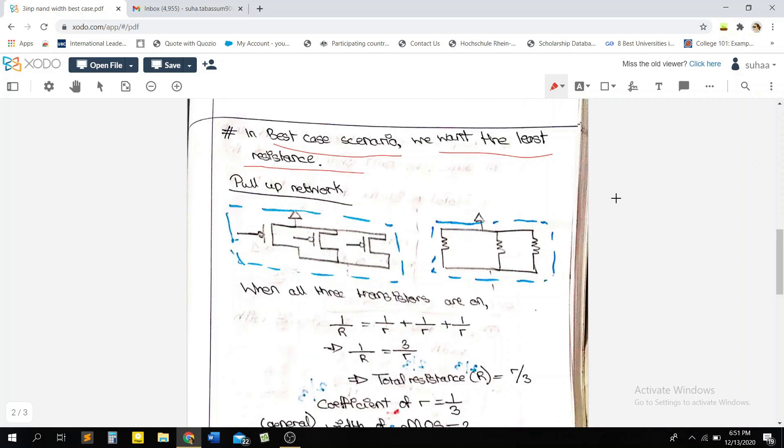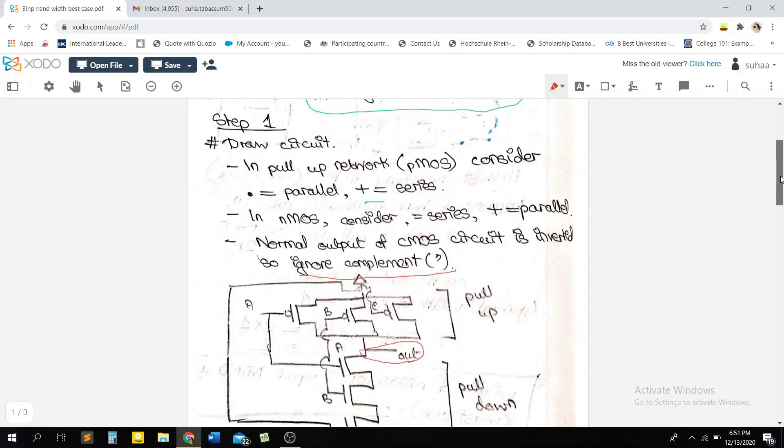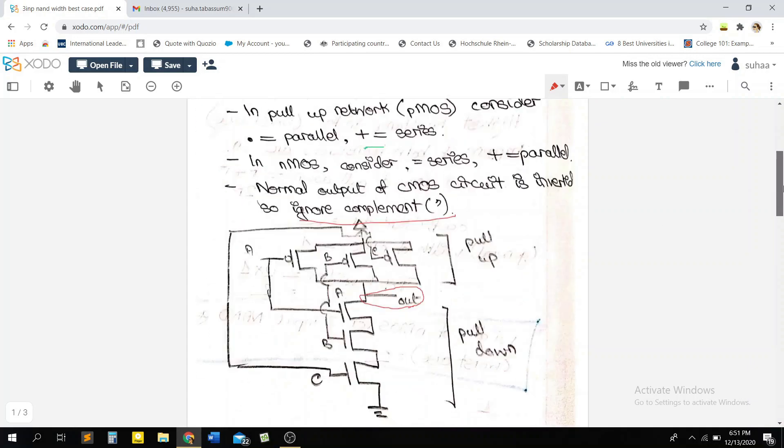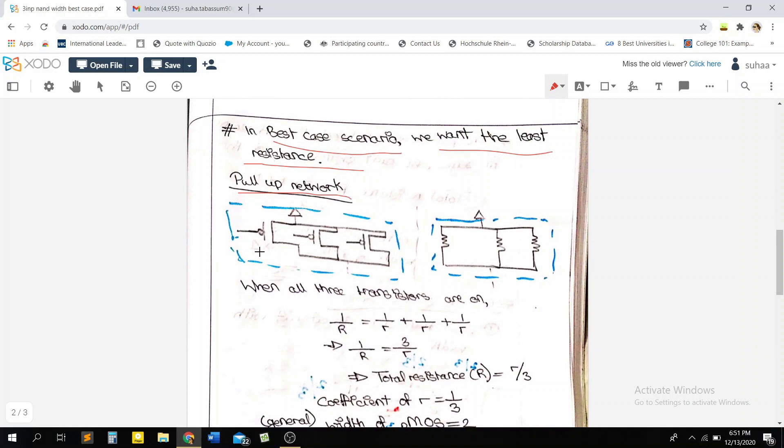So now we're going to be calculating the width of our circuit. And in the best case scenario, what we basically want is the least resistance. So which combination of transistors in the pull up and the pull down network will result in the least resistance. So let's consider the pull up network here. Remember that it was basically these three PMOSs connected in parallel. And remember in the last video, we discussed that each transistor can be represented as a resistance.